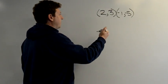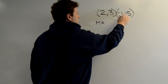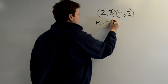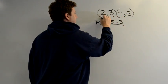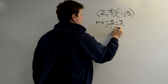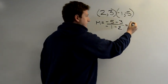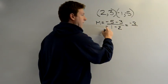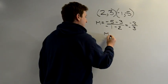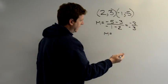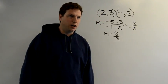I think we can find the slope pretty easily here. We know that M equals Y2 minus Y1 over X2 minus X1. Negative 5 minus 3 is negative 8, over negative 1 minus 2 is negative 3. A negative divided by a negative is always positive, so I get 8 over 3. I got a slope.